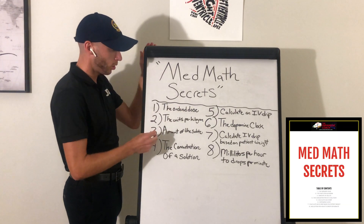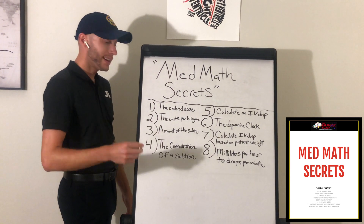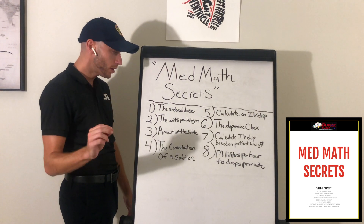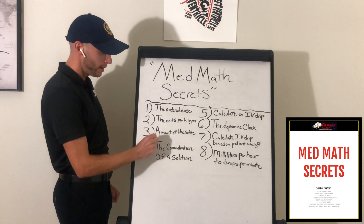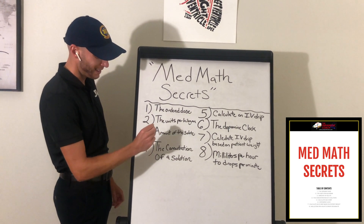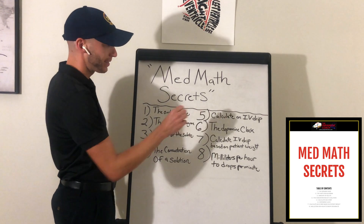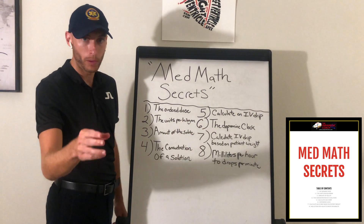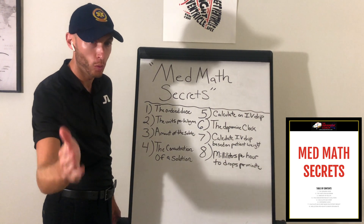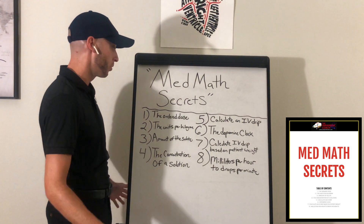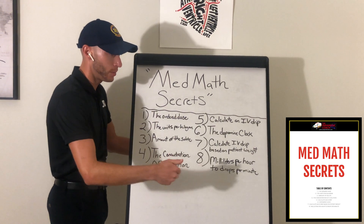The first section is called the ordered dose — finding the ordered dose for the patient. Number two is finding the units per kilogram. Number three is the amount of the solute. Number four is finding the concentration of a solution — very key. Number five is calculating an IV drip. Number six, the dopamine clock. Number seven, calculating an IV drip based on the patient's weight — so important. And number eight is milliliters per hour to drops per minute — how do we convert and change that?